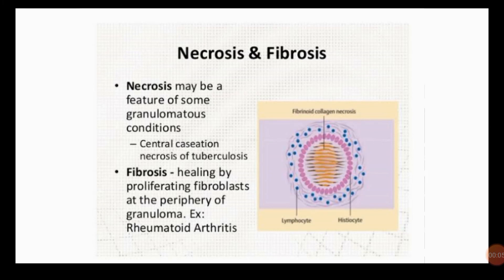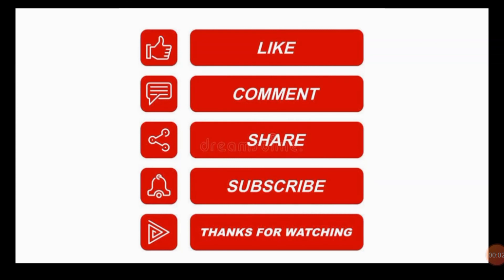Necrosis and fibrosis result from granuloma formation. Necrosis may be a feature of some granulomatous conditions; in tuberculosis, there is always central caseous necrosis. Necrosis occurs due to hypoxia and free radical injury, leading to a central zone of necrosis. Fibrosis occurs because the injured cell does not have the full capacity to regenerate to its original extent. Healing is by proliferating fibroblasts at the periphery of the granuloma, and this occurs in rheumatoid arthritis. You can share your queries in the comment section. Thank you.